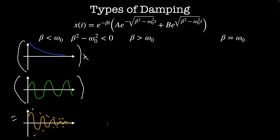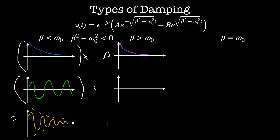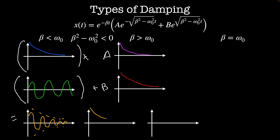When β > ω₀, the term in the square root is positive, giving either exponential growth or decay. But since √(β²-ω₀²) is always less than β, both terms end up decaying exponentially. The solution is a·e^(-(β - √(β²-ω₀²))t) plus b·e^(-(β + √(β²-ω₀²))t), where the second term decays a little slower. Adding these together, when a and b have the same sign we get purely exponential decay, and when they have opposite signs we get a solution that crosses the x-axis, reaches a peak, and then exponentially decays. This case is called overdamped.